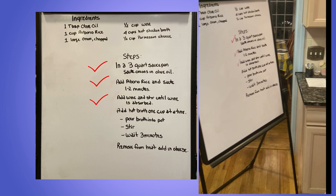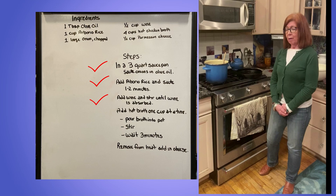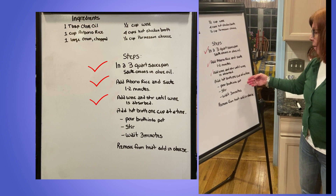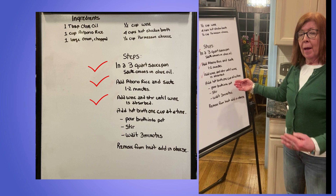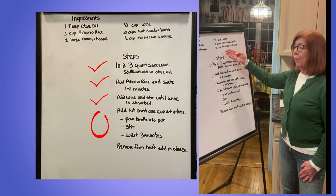The next step is to add the hot broth one cup at a time. There are three steps: pour the broth into the pot, stir, and wait three minutes. I need to do this step four times, as there are four cups of broth in the ingredients.